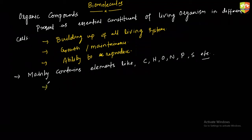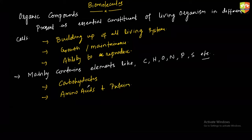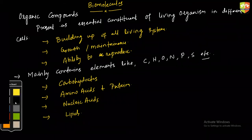This chapter has four different parts. We are going to discuss carbohydrates, amino acids and proteins — which are important from a chemistry point of view — as well as nucleic acids and lipids. For exam purposes and from a chemistry point of view, carbohydrates and amino acids are the most important parts. The first part is carbohydrates — most questions come from here.